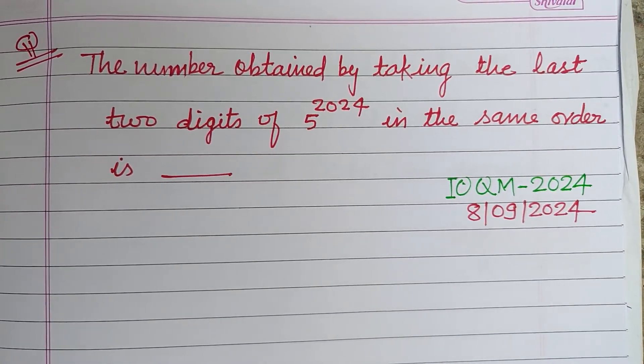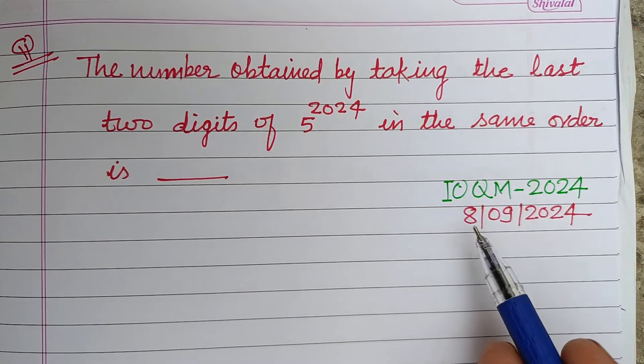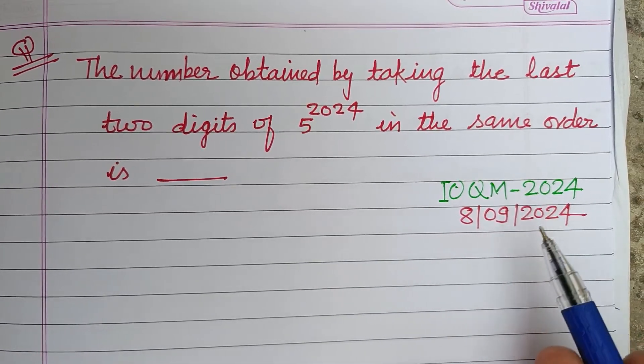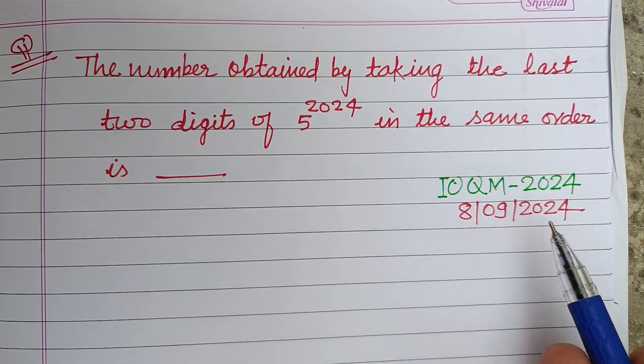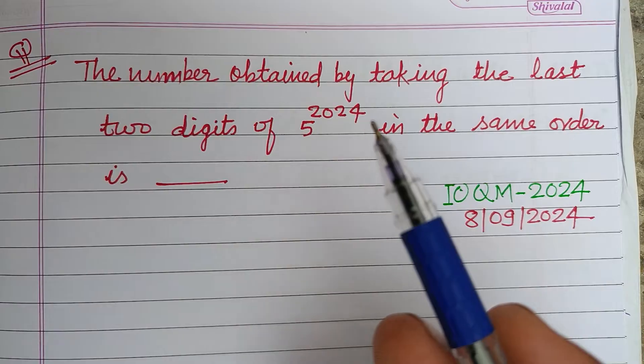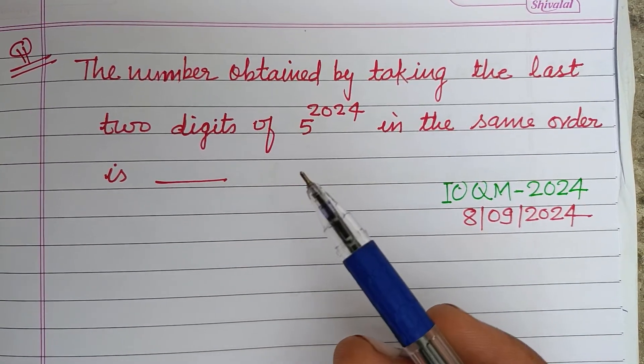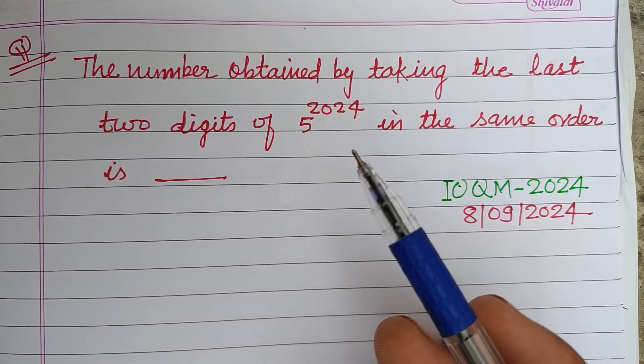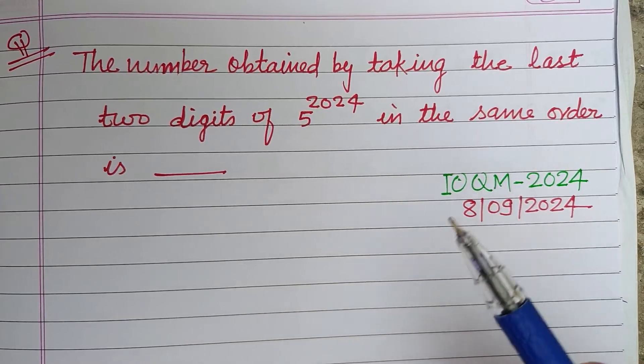Hello viewers, warm welcome to this YouTube channel. Question from IOQM 2024, held on 8 September 2024: The number obtained by taking the last two digits of 5 to the power 2024 in the same order is?